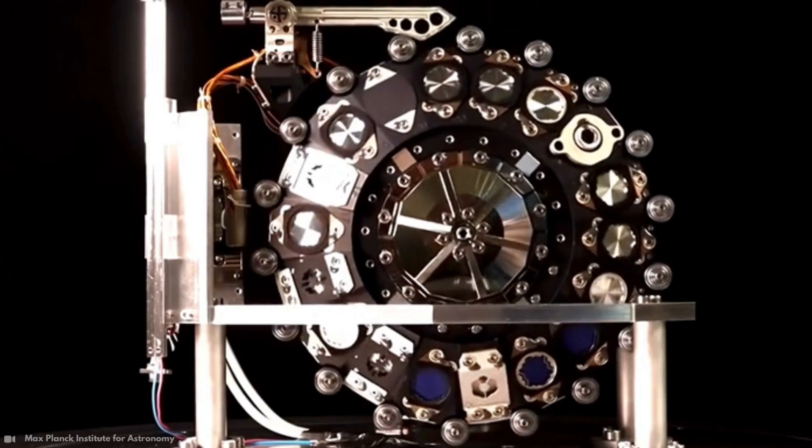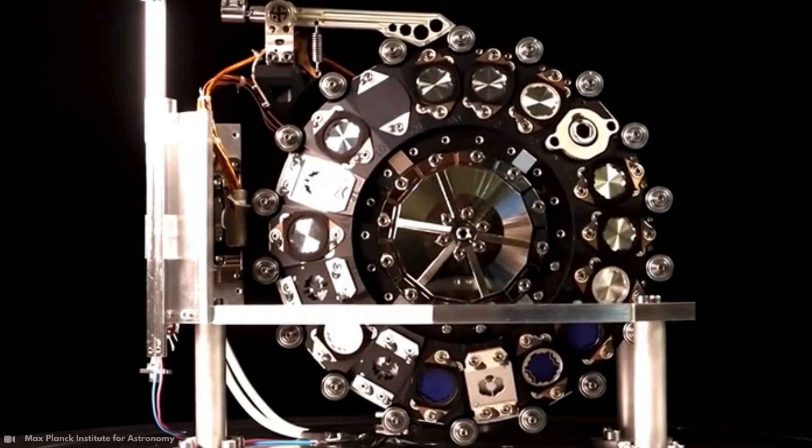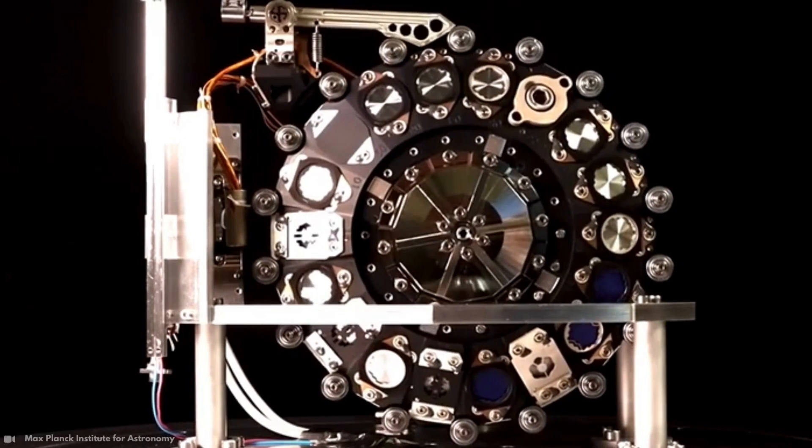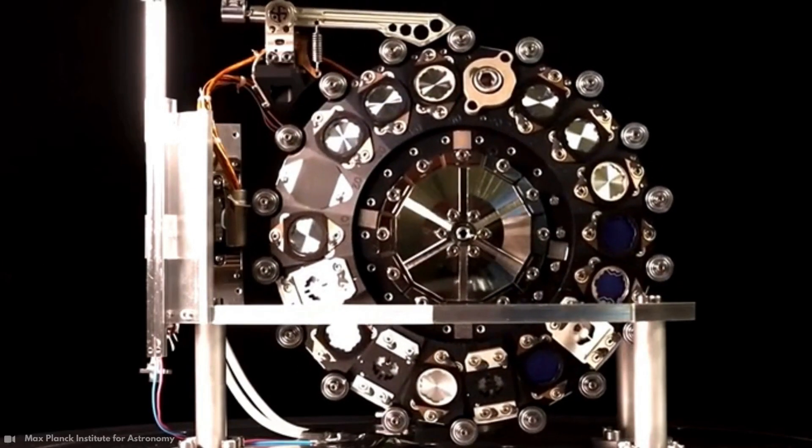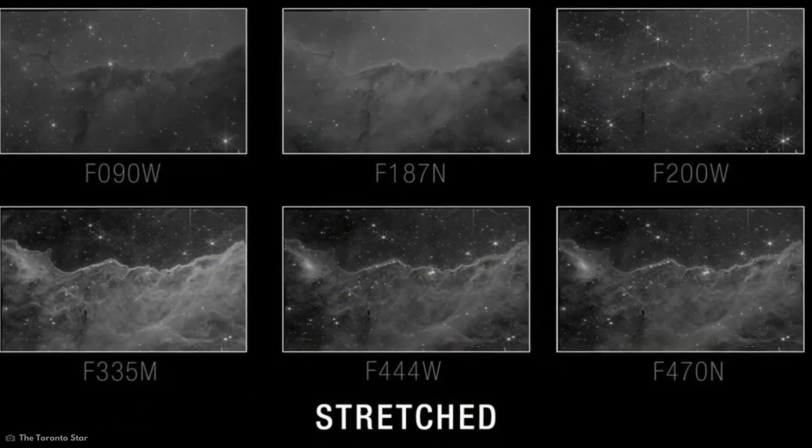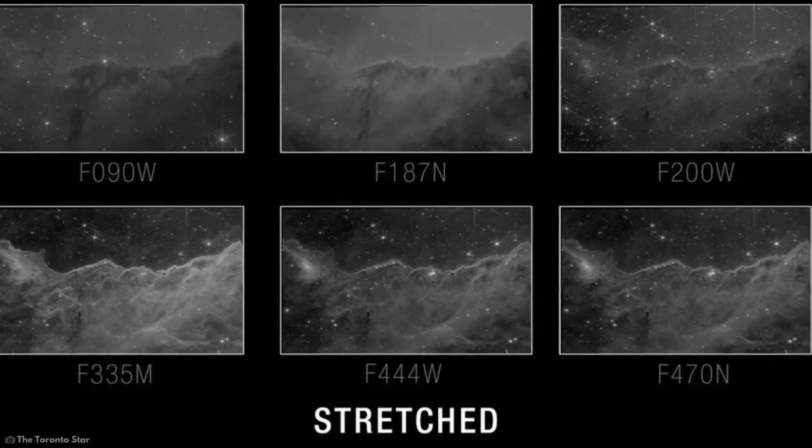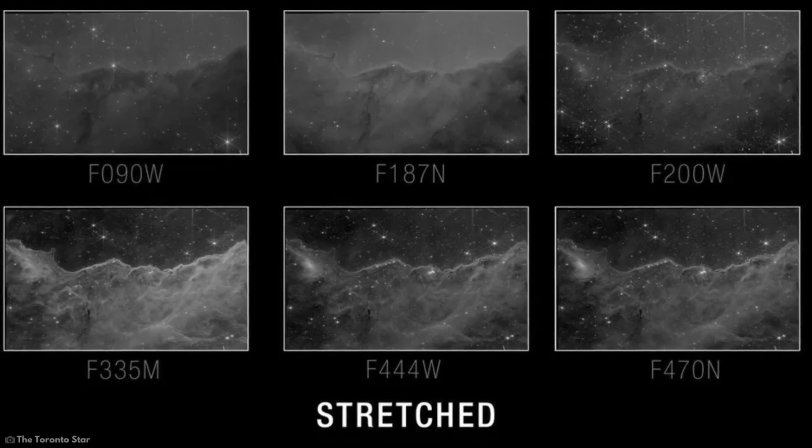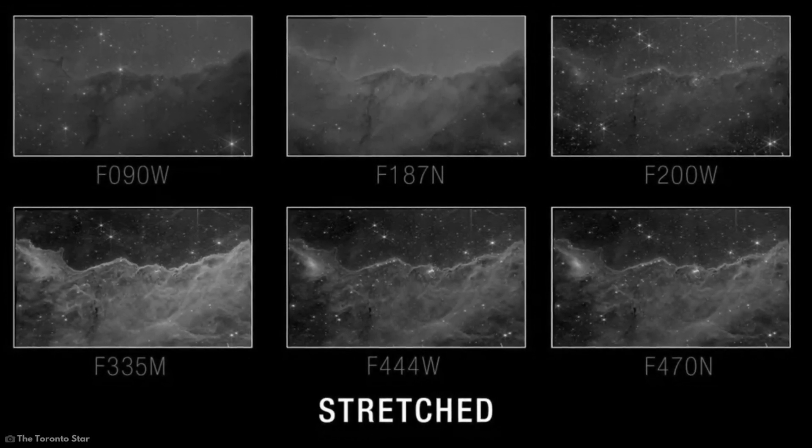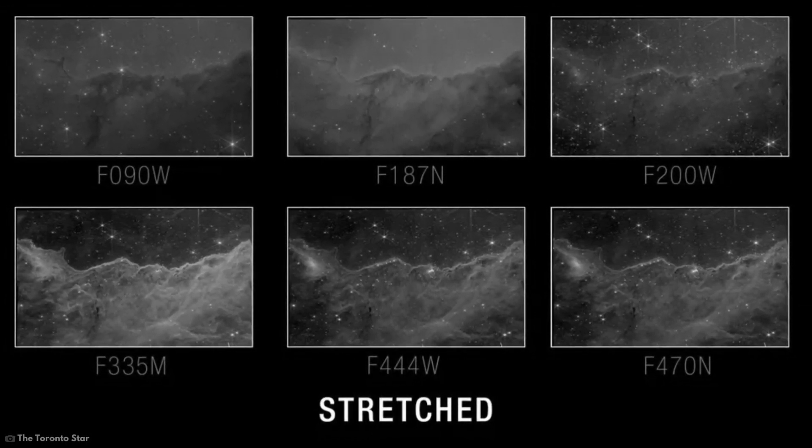Webb captures different ranges of the infrared spectrum. It can take images in up to 27 filters. Scientists first isolate the most dynamic range for a given image. They then scale the most useful brightness values to reveal the most detail.